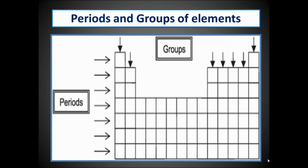Periods and groups of elements: periods are the horizontal rows from left to right, and groups are the vertical columns from top to bottom.